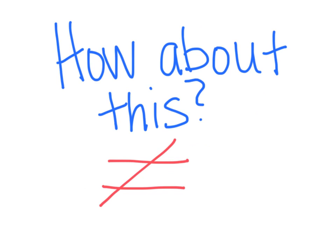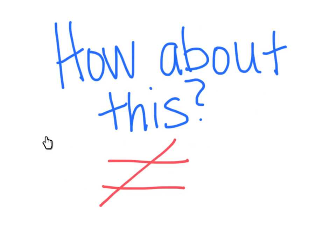How about this symbol? It looks a little bit different than our equal sign. What does this mean? The line through the middle means it is not equal. So that means this side and this side are not the same value. They are not equal.